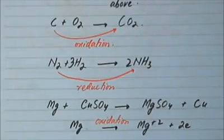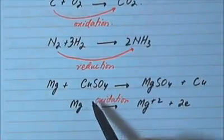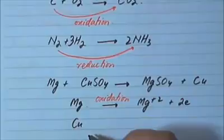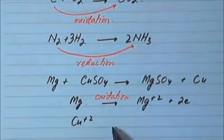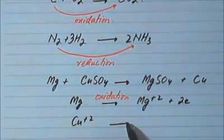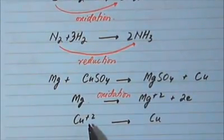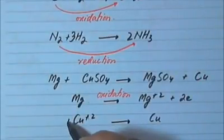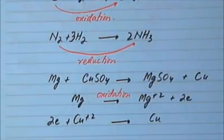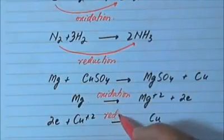On the other hand, copper was present as a Cu²⁺ ion in copper sulfate, and it became copper metal. The only way to go from Cu²⁺ to Cu is by gaining two electrons. So copper gained two electrons, and this gain of electrons is called reduction.